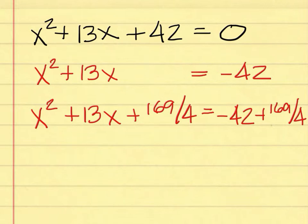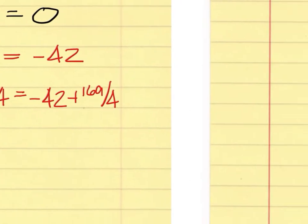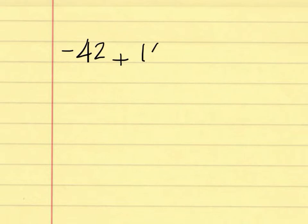What is my next step? A student answers: you've got to do the right side. That's right — we have to simplify the right-hand side. So that's negative 42 plus 169 over 4. What's the common denominator? A student answers: four. Four is right.